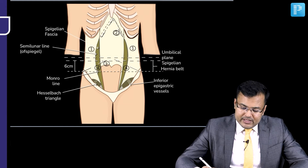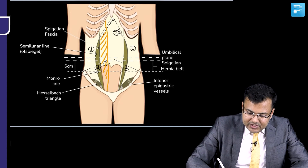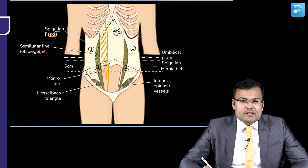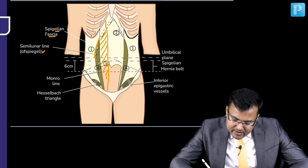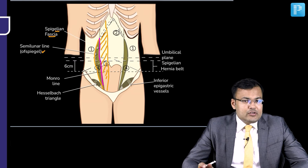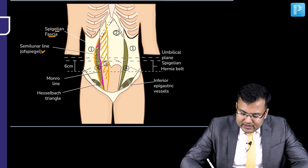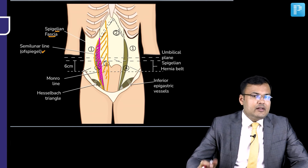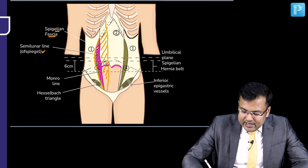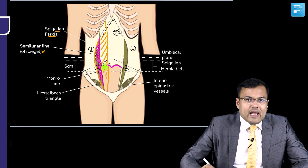Now, see the important points related to anatomy. You can see this is the rectus abdominis muscle. What is the location of this spigelian fascia? This is the spigelian fascia. It is bounded laterally by a line known as the semilunar line of Spigel. The medial boundary is the lateral border of rectus abdominis. So it is located between rectus abdominis medially and the semilunar line of Spigel laterally. Most of these hernias are located at or below the arcuate line.